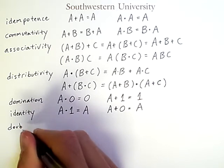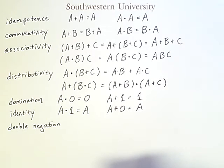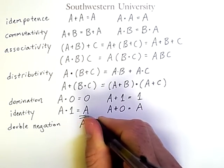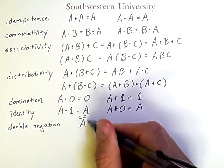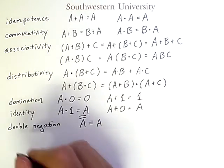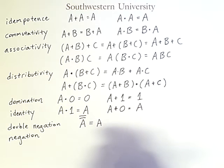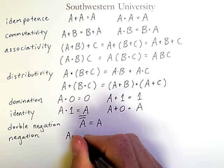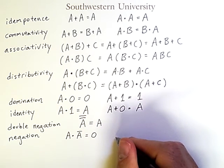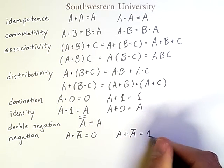Another law which makes intuitive sense is double negation. This simply says that if you negate an expression twice, you get back the original expression. So the negation of NOT A indicated by two NOT bars above the expression is equal to A. And we also have more general negation laws indicating that A AND NOT A is always false or equal to 0 and A OR NOT A is always true or equal to 1.